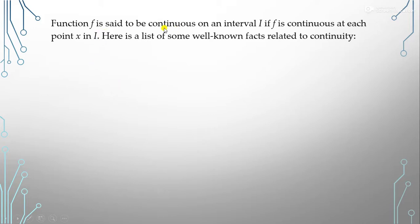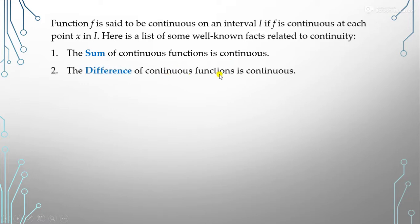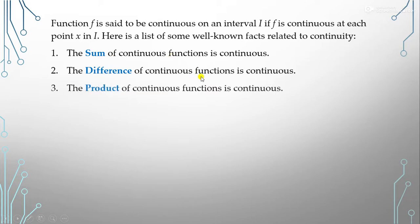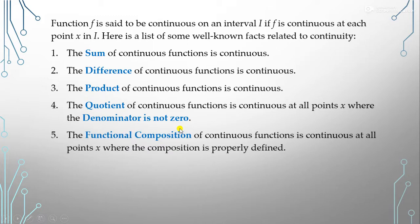A function f is said to be continuous on an interval I if f is continuous at each point x in I. Here are some well-known facts: if you have two continuous functions, their sum, difference, and product are all continuous. The quotient of continuous functions is continuous at all points x where the denominator is not zero.